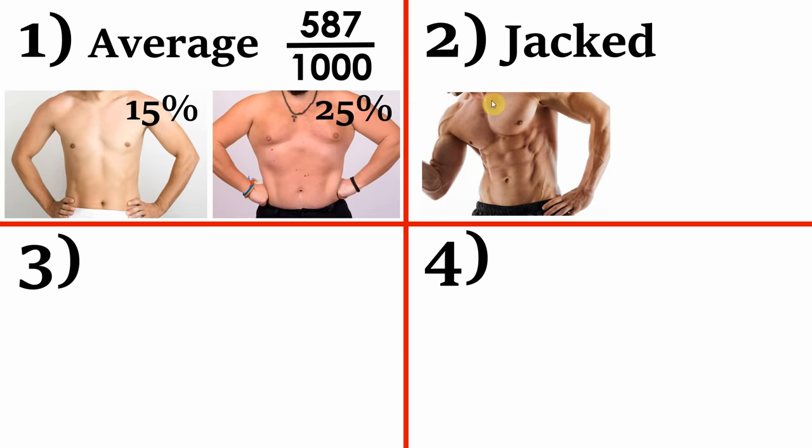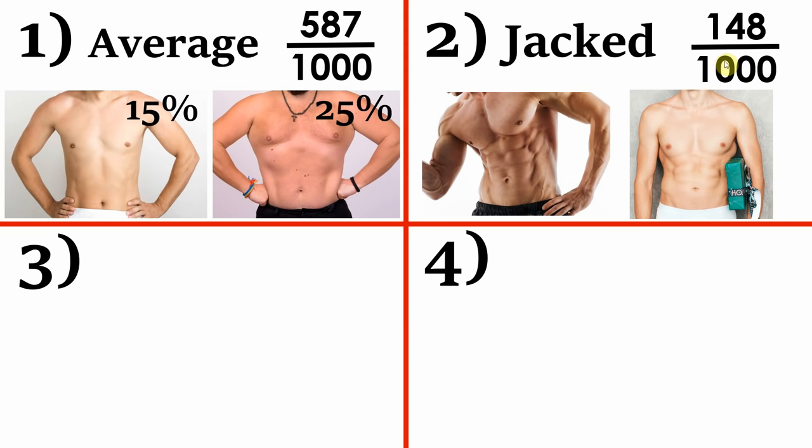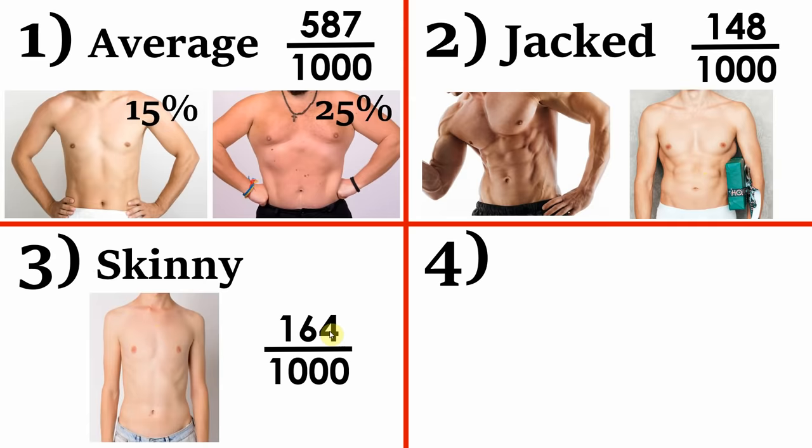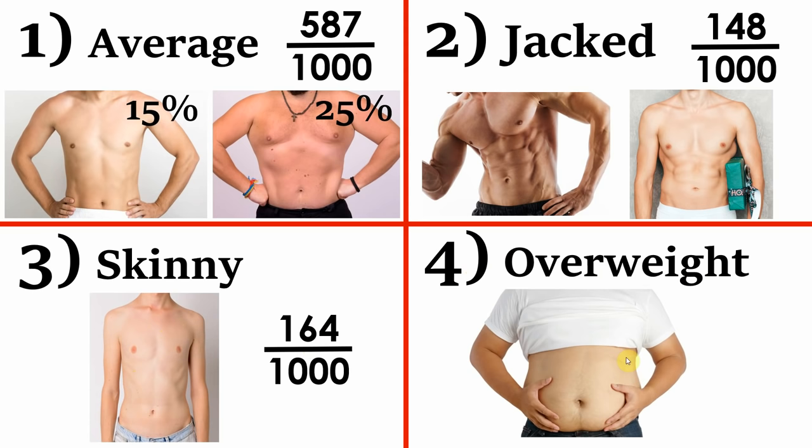all on top of a low body fat percentage. I also placed anyone of an athletic build into this category too. In total, there were 148 of these, which I actually find quite surprising. I didn't expect there to be anywhere near this many jacked guys out there. 3. Skinny. Anyone who's low body fat percentage with minimal muscle, there were 164 of these. In particular, a lot of young guys, guys below the age of 21. 4. Overweight. Anyone who's clearly above 25% body fat, and this also includes anyone who I deem to be skinny fat. There were 101 of these, so 10% of guys were overweight.